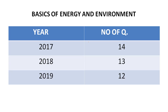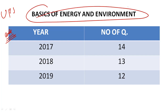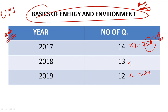Before starting, I need to suggest that this subject is going to be very important — not only for this exam, but every year if you are going for any UPSC exam or other exams, Energy and Environment carries the highest weightage in marks. In 2017, 14 questions — that is 28 marks — came from Basics of Energy and Environment. In 2018, 13 questions giving 26 marks, and in 2019, 24 marks. You can see how important this subject is for your selection.